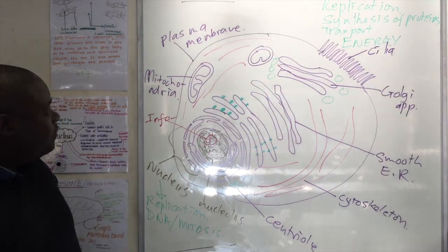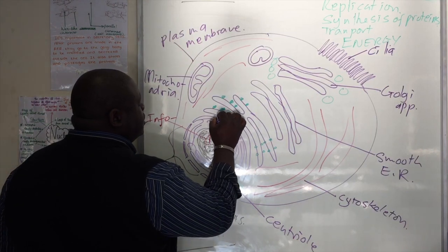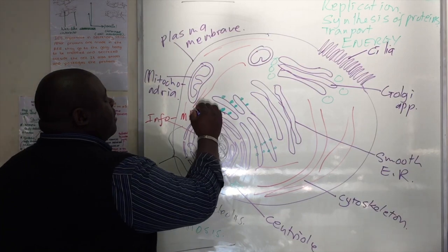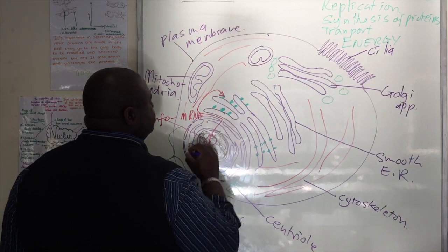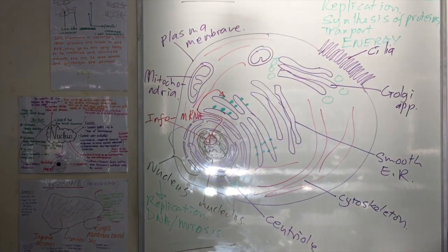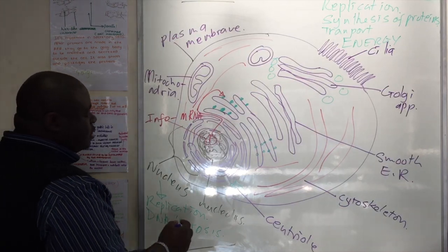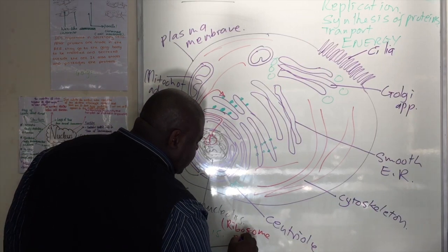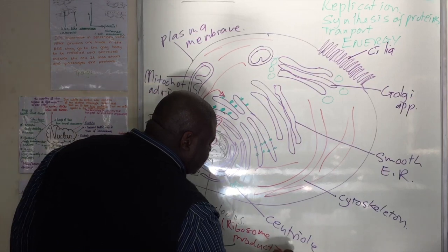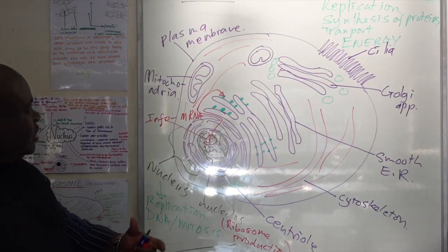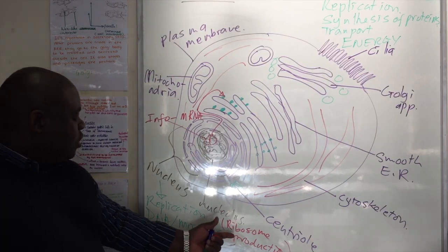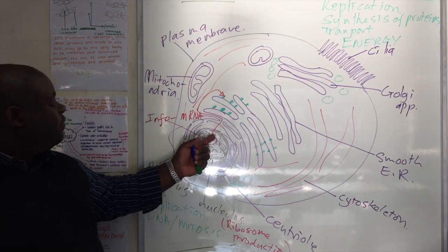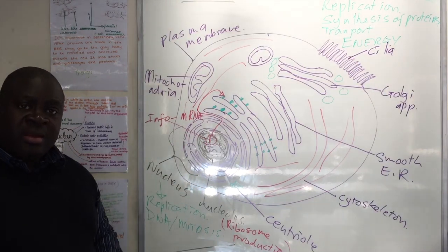Where does that information go? The information is sent out of the nucleus in the form of mRNA, and that mRNA goes to join a ribosome. But where was this ribosome made? The ribosome was synthesized in the nucleus — ribosome production happens in the nucleus. So the nucleus is responsible for ribosome production, and the information for protein production is obtained from the DNA of the chromatin within the nucleus.